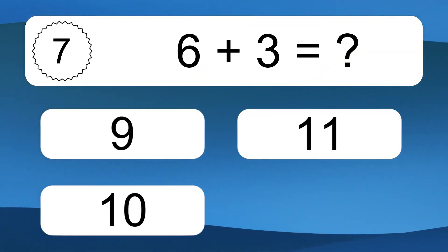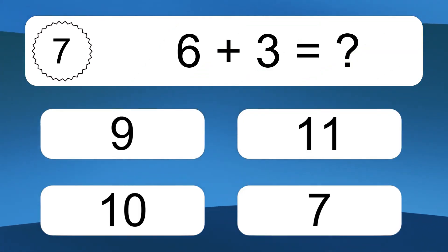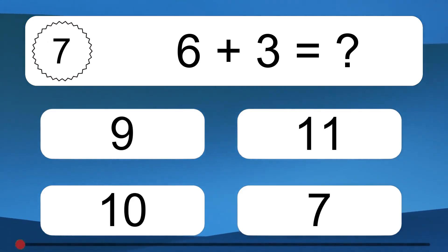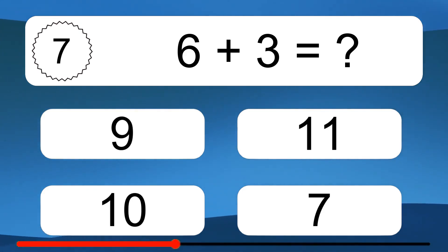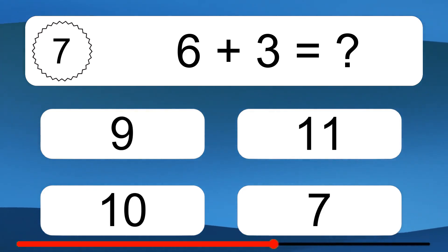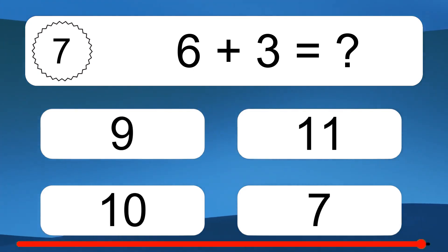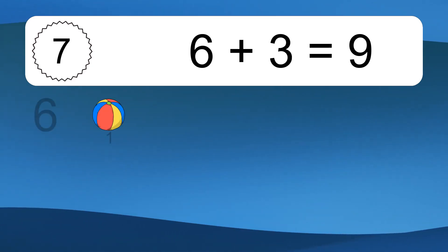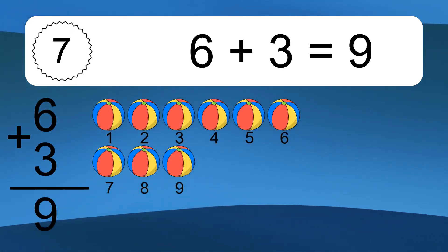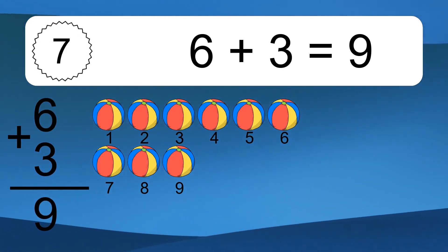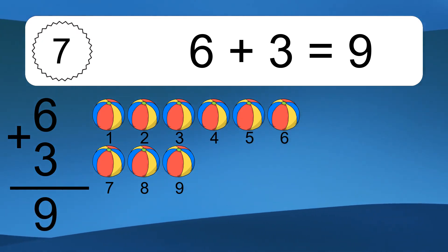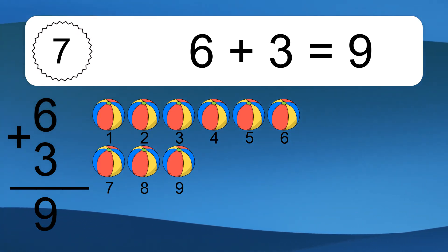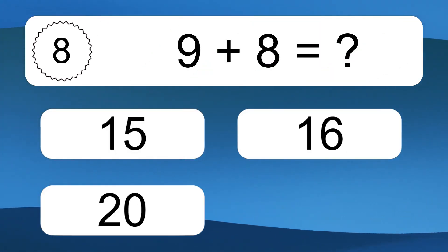6 plus 3 equals what? 6 plus 3 equals 9. Let's count it. 1, 2, 3, 4, 5, 6, 7, 8, 9.